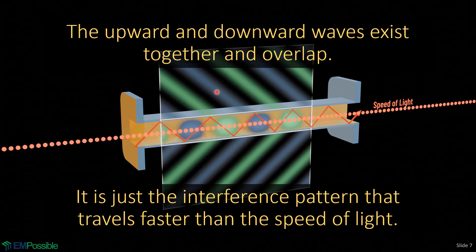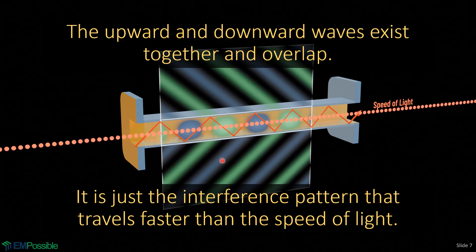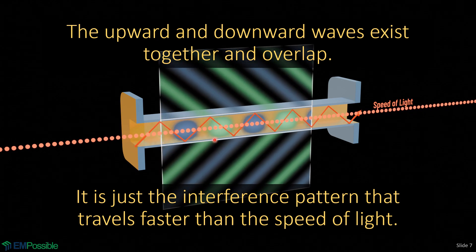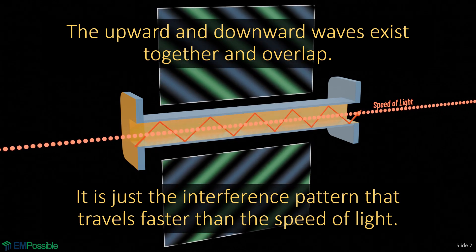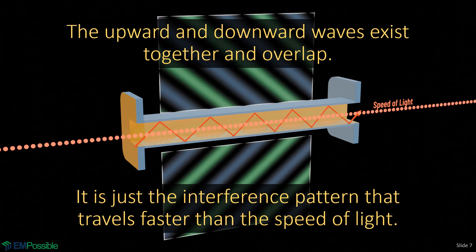And in fact, the more upward and downward these waves are, in other words, the more this is bouncing vertically, the faster that interference pattern will be traveling through the waveguide.